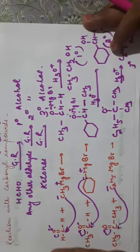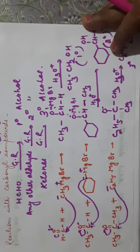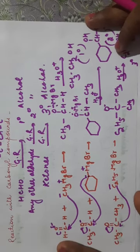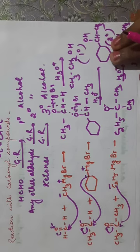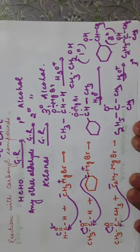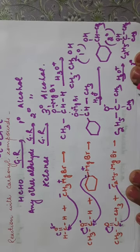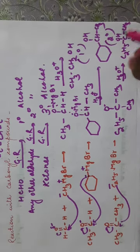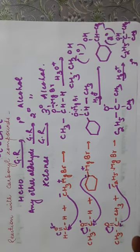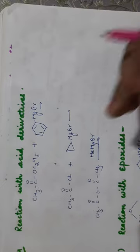Summary: to form a 1° alcohol from Grignard reagent, start with formaldehyde. To form a 2° alcohol, start with any aldehyde other than formaldehyde. To form a 3° alcohol, start with a ketone.